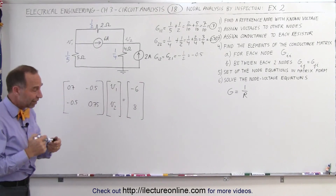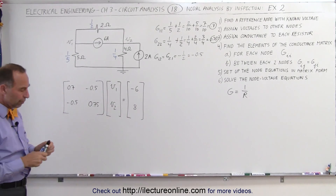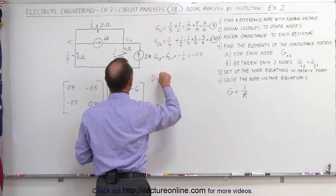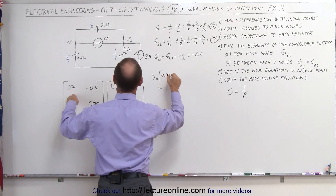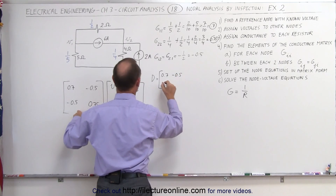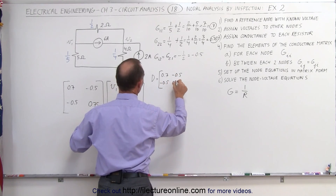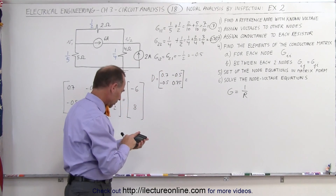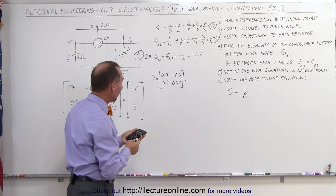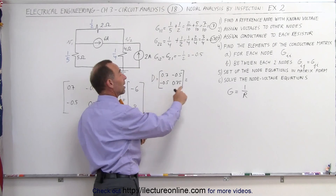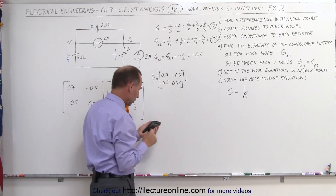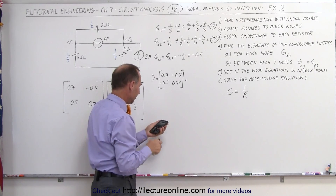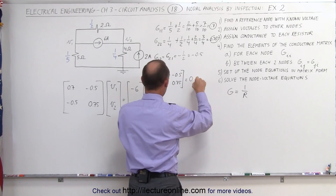Now we have our equation set ready to find V1 and V2. Using the determinant method, D equals 0.7 times 0.75 minus the product of the two off-diagonal elements. Since both off-diagonals are negative, that becomes minus 0.25. So 0.525 minus 0.25 gives a determinant of 0.275.